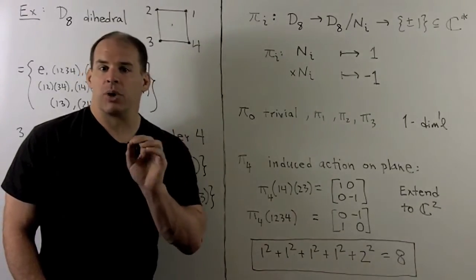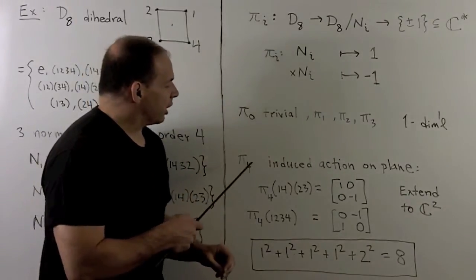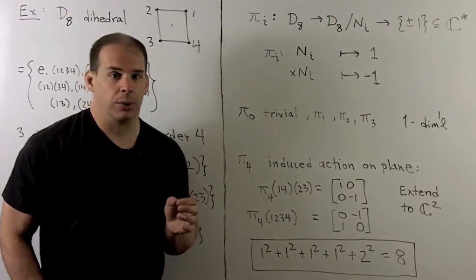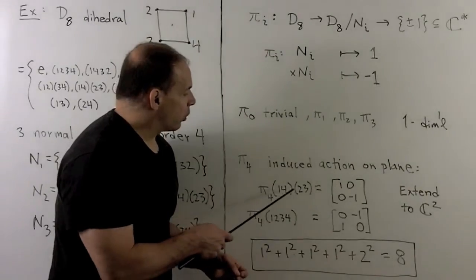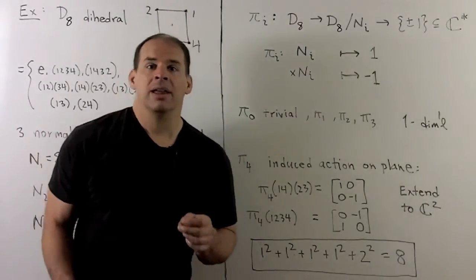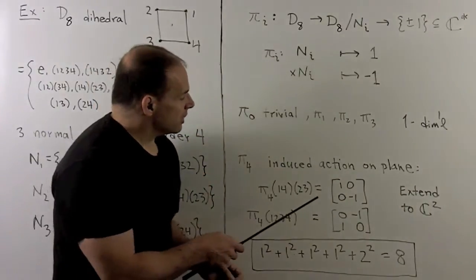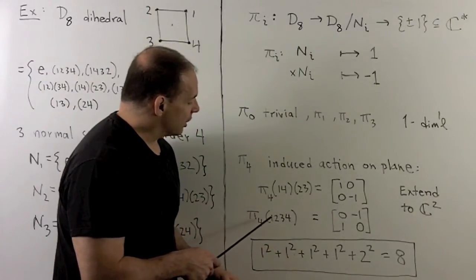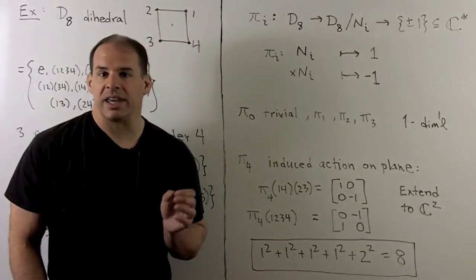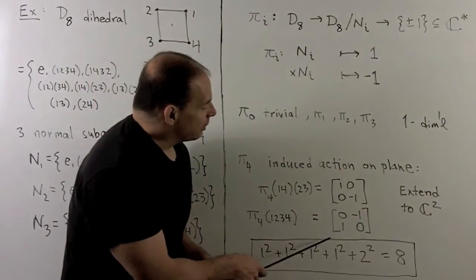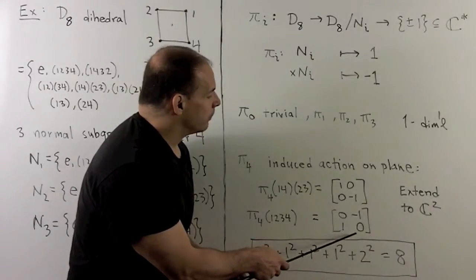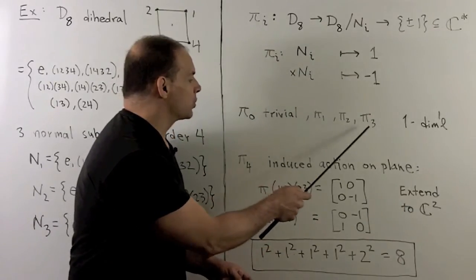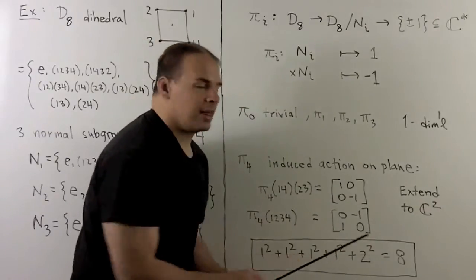By the main result, we have room for a four, which we fill with a two-dimensional representation. Like the two-dimensional representation for S3, we consider the action induced on the plane from the symmetries of the square, then extend to C². For instance, the cycle (1 4 2 3) is reflection across the x-axis, giving matrix [1, 0; 0, -1] in the standard basis. The cycle (1 2 3 4) is rotation by 90 degrees counter-clockwise, giving matrix [0, -1; 1, 0]. Once we show this is irreducible, we have 1² + 1² + 1² + 1² + 2² = 8, which is the order of the group.